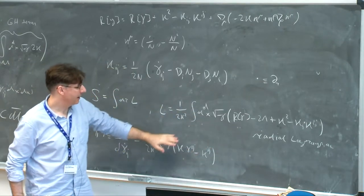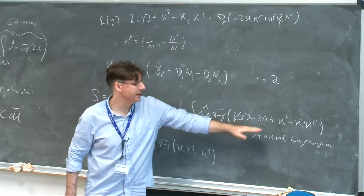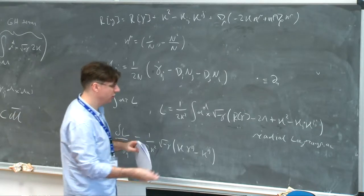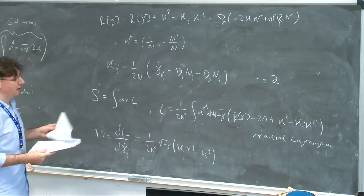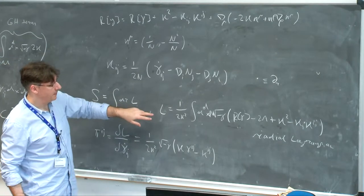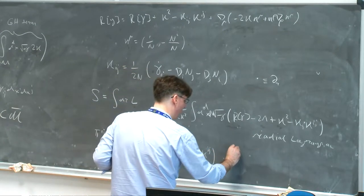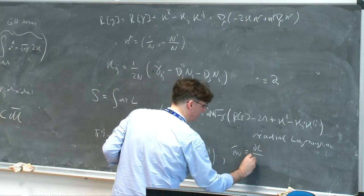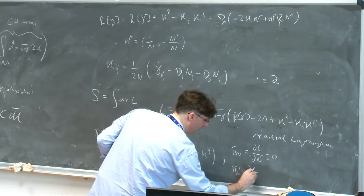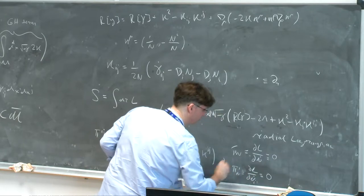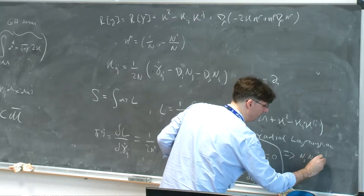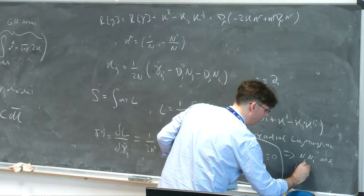This Lagrangian does not depend on n-dot — it depends only on n. So if you compute the canonical momenta, pi of n is the derivative with respect to n-dot, and it's identically zero. The same for pi of n_i — also identically zero. This implies that n and n_i are Lagrange multipliers — they are non-dynamical, auxiliary fields.